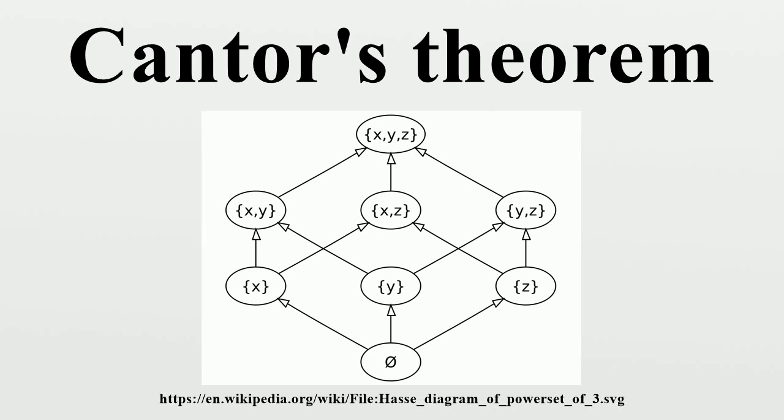More specifically, consider any X in A, then either X ∈ F(x) or X ∉ F(x). In the former case, F(x) cannot equal B because X ∈ F(x) by assumption and X ∉ B by the construction of B.